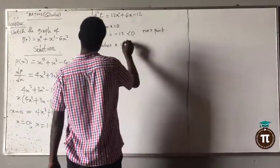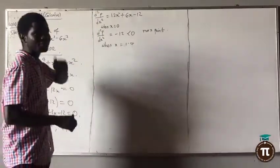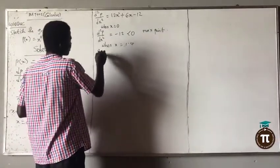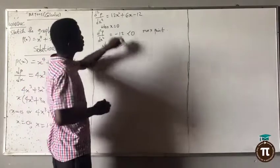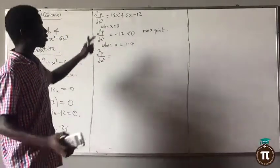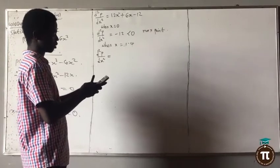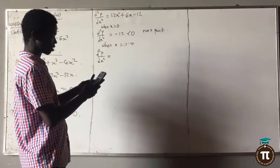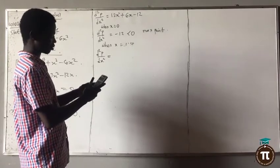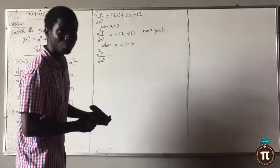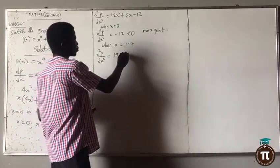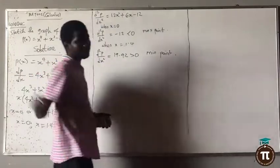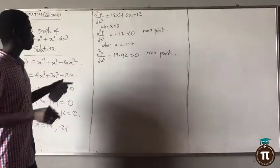When x is equal to 1.4, calculate d²p/dx²: 12 multiplied by 1.4 squared plus 6 multiplied by 1.4 minus 12. The answer is 19.92, which is greater than zero — this is a minimum point.